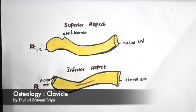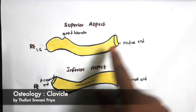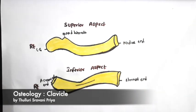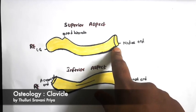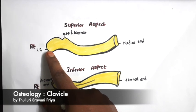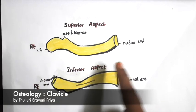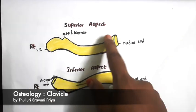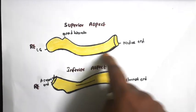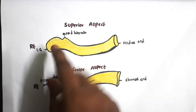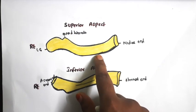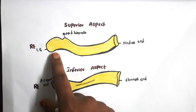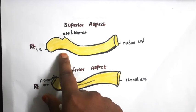Now we will see the side determination of the clavicle. The medial end is quadrangular in shape and should be placed to the medial side. The lateral end, which is flat, is known as the acromial end and should be placed on the lateral side. The clavicle shaft is divided into a medial two-third part and a lateral one-third part. The medial two-third part is convex forwards anteriorly, whereas the lateral one-third part is concave forwards.